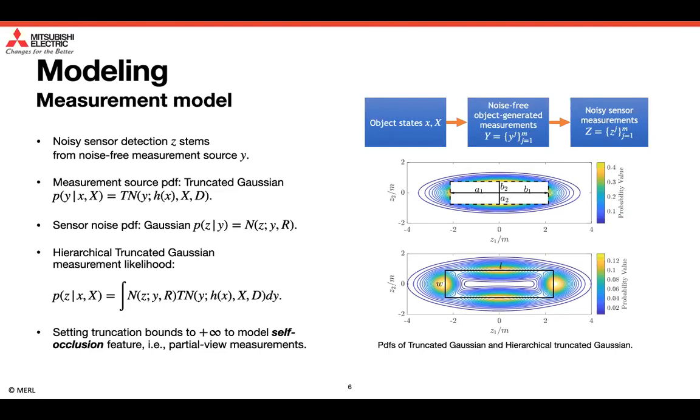As we can see, under this measurement model, the distribution of the noisy sensor measurement resembles the spatial distribution of the real-world radar measurements. There is low probability at the object center and there is high probability around the edges. Moreover, we can set at most 3 out of the 4 truncation bounds to infinity to model the self-occlusion feature. That is, when partial view measurements are available.